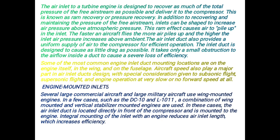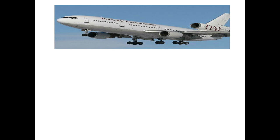Engine mounted inlets: Several large commercial aircraft and large military aircraft use wing mounted engines. In a few cases such as the DC-10 and L-1011, a combination of wing mounted and vertical stabilizer mounted engines are used. In these cases, the air inlet duct is located directly in front of the compressor and is mounted to the engine. Integral mounting of the inlet with an engine reduces air inlet length, which increases efficiency. The DC-10 has three engines — two on the wing and one on the vertical stabilizer — and the inlet is located directly ahead of the compressor, reducing drag and increasing efficiency.